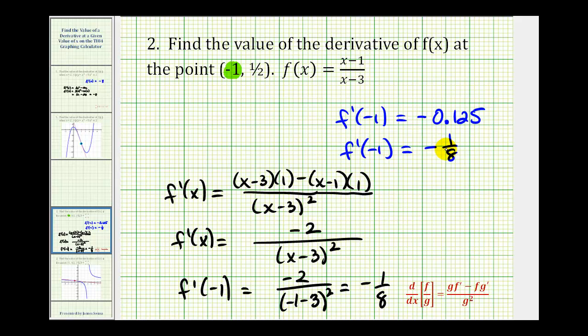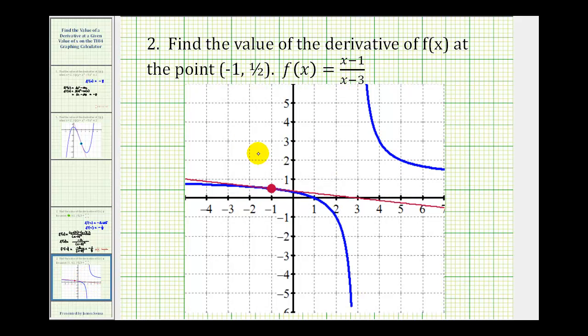And again, graphically, what this is telling us is, at this point here on our function, the tangent line would have a slope of negative 1/8. Let's go ahead and verify that. Here's the point we're referring to. This red tangent line does have a slope of negative 1/8.